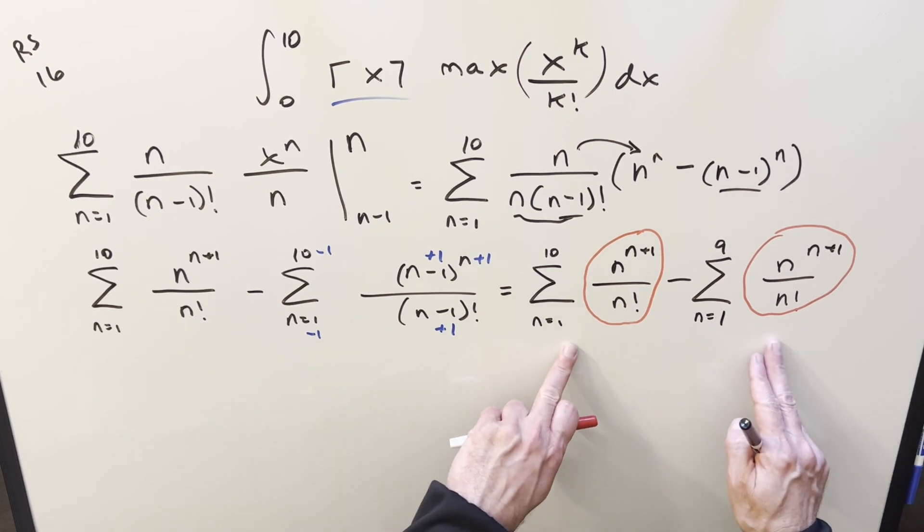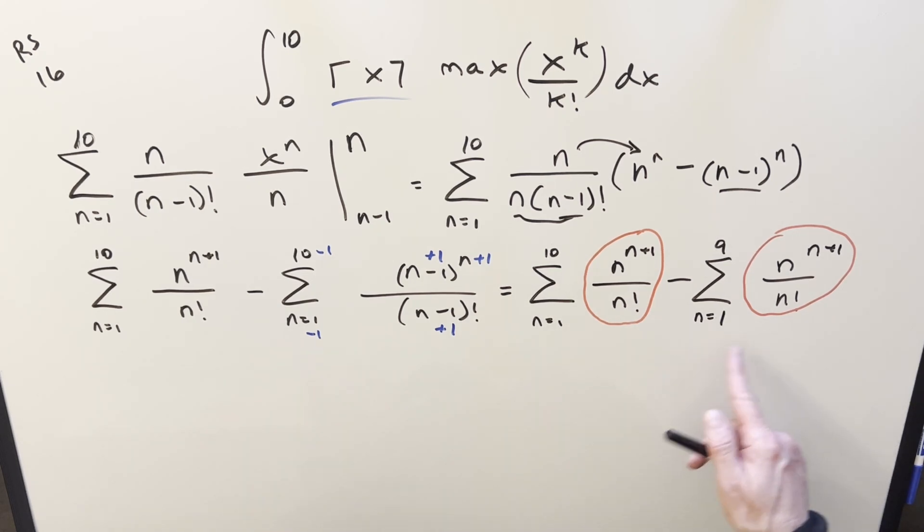And then at this point, we have almost the same exact thing here and here. We're basically subtracting off 9 out of the 10 terms. So what you can do is just plug in 10 and finish it off.